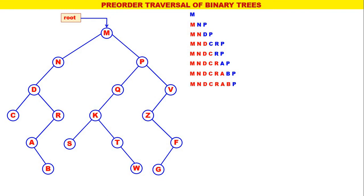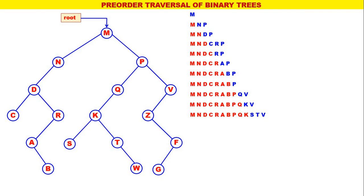Next leftmost is P — the pre-order for P is P, Q, V with P processed. Therefore P is replaced by P, Q, V with P processed. Next leftmost is Q — the pre-order for Q is Q, K with Q processed. Therefore Q is replaced by Q, K with Q processed. The leftmost is K — the pre-order for K is K, S, T with K processed. Therefore K is replaced by K, S, T. The pre-order for S is S only with S processed. Now the leftmost is T — the pre-order for T is T, W with T processed. Therefore T is replaced by T, W with T processed. Next leftmost is W — the pre-order for W is W only with W processed.